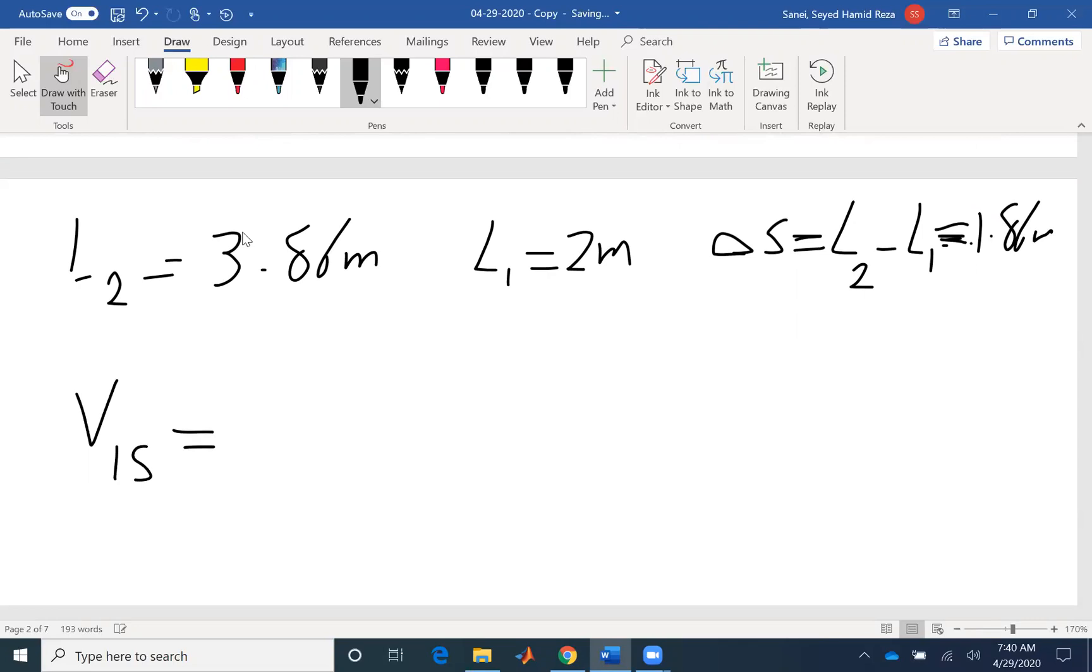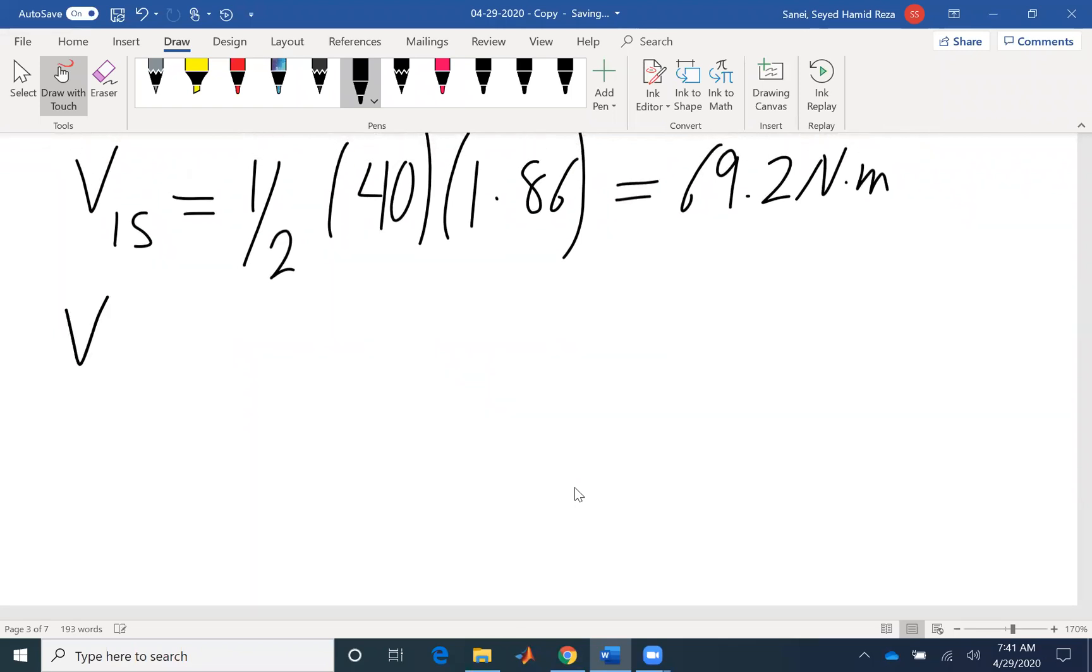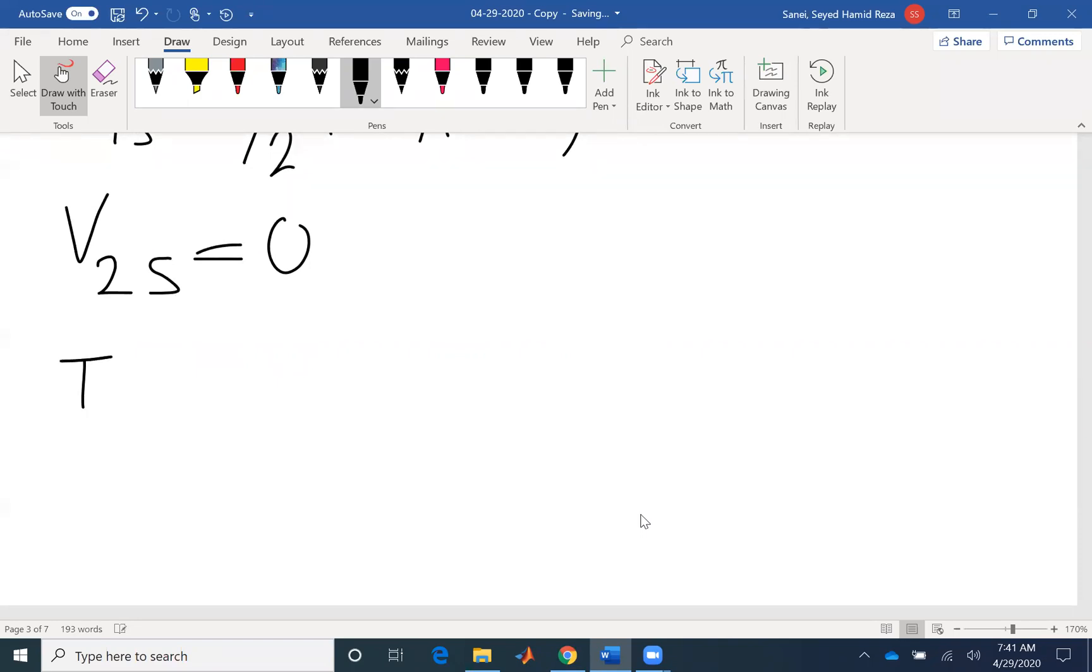Now I can find the potential energy for my spring. V1S equals half, spring constant is 40, times 1.86 squared. The distance is in meters. The spring stiffness is in newton-meters. So we don't need to do any conversion, but more often than not, you would see that the spring constant is given in kilonewtons and the distance is given in millimeters. So you need to be careful about the units. We are done with the potential energy. The final potential energy V2S would be zero because that's when it becomes unstretched.